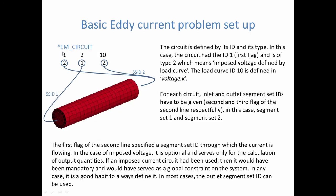Finally, the last keyword which we're going to introduce is the EM circuit keyword. So the circuit is defined by its ID, that's the first flag there, and its type. In our case, we want to impose the voltage by a load curve, which is contained in this voltage.k file. So again, if you read the keyword manual, you will see it's a type 2, associated with load curve number 10, which is the ID in voltage.k.